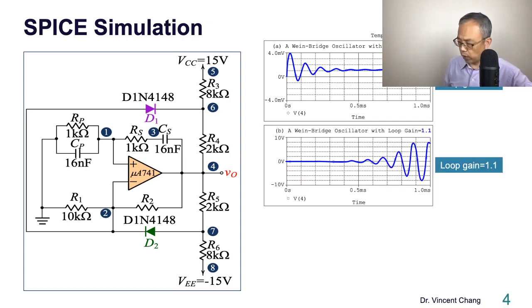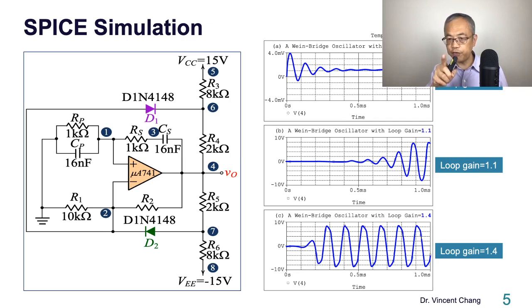If loop gain is 1.1, that's what you see. After 0.5 milliseconds, the amplitude starts growing. If it's 1.4, then the time to initiate the amplitude growing starts sooner, earlier, around 0.1 milliseconds. You see the different loop gain have different outcome.